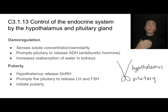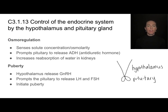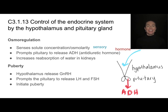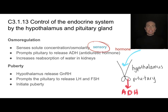Let's look at a couple of examples. First, osmoregulation — regulating the osmolarity or solute concentration of our blood. The hypothalamus receives information from sensory organs about the solute concentration of the blood. If the solute concentration is too high and the body needs to conserve water, the hypothalamus prompts the pituitary gland to secrete ADH — antidiuretic hormone. That hormone then causes reabsorption of water in the kidney, and that is the link between the nervous system and the hormone.